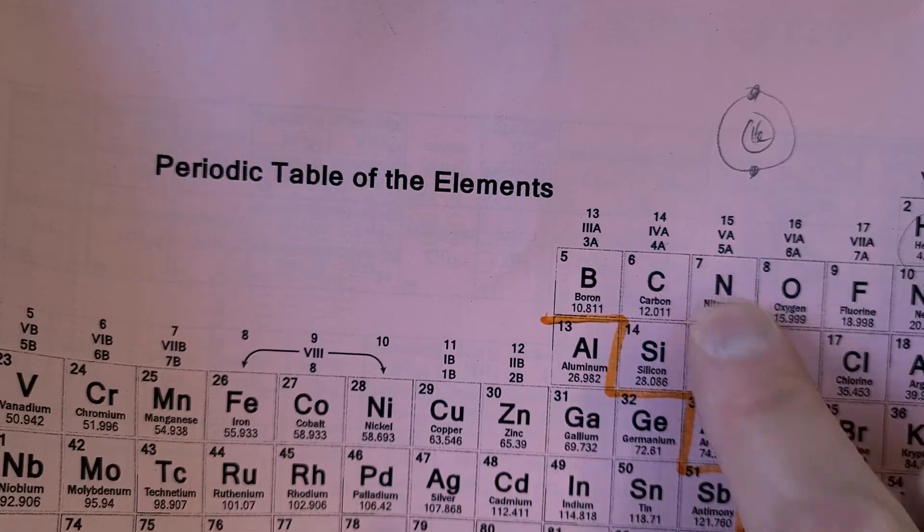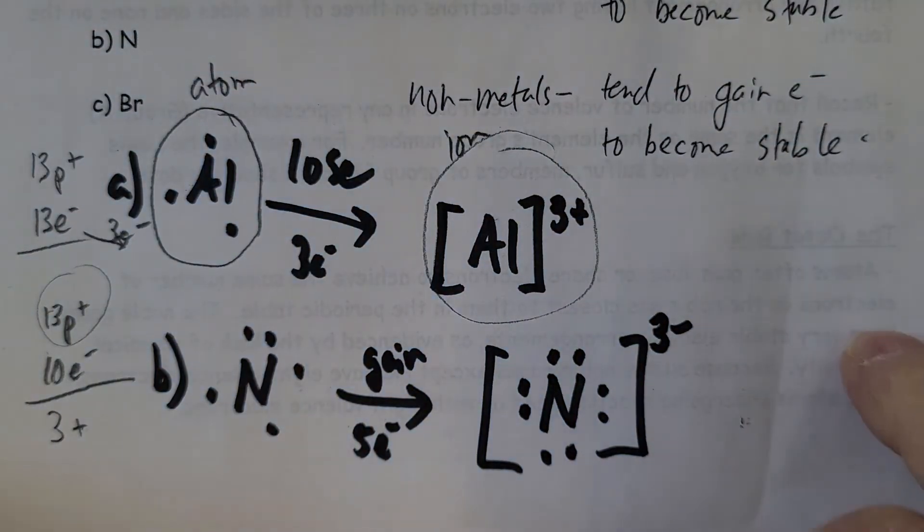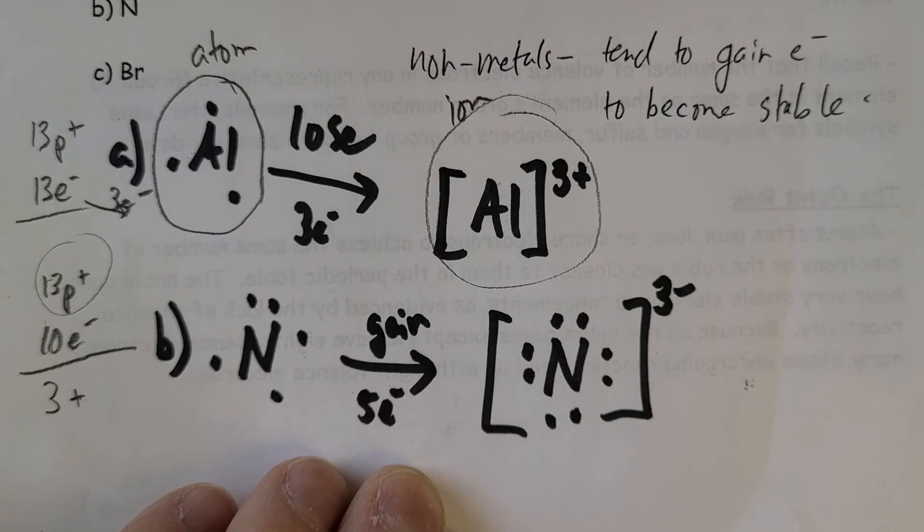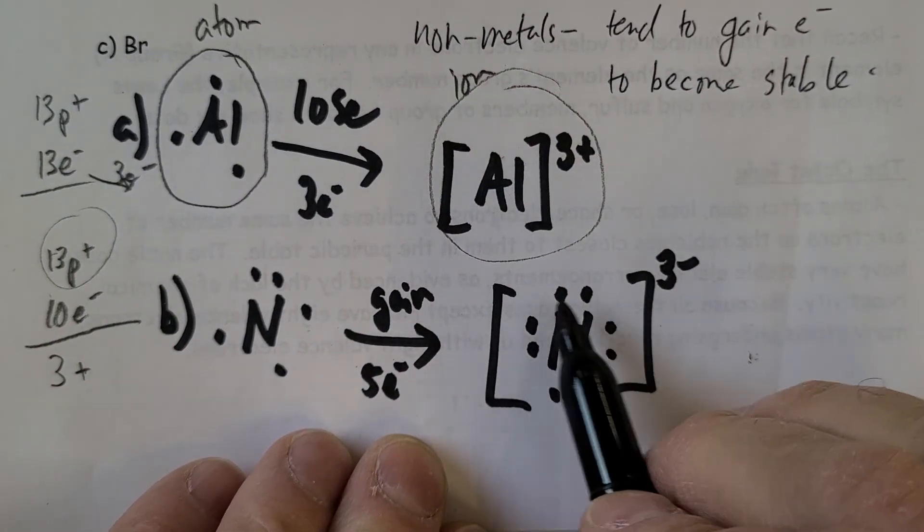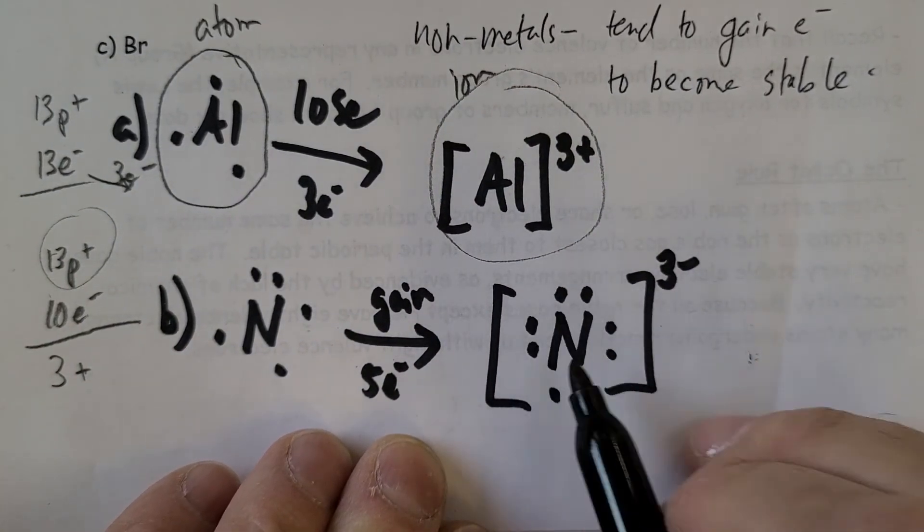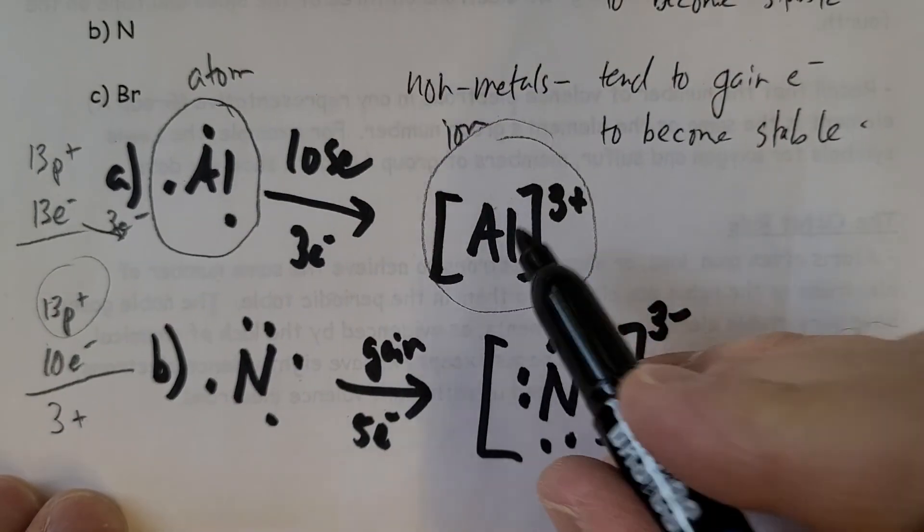We could think of it as it had seven protons and seven electrons, but if it gains three, it's going to have ten electrons and seven protons. So those three will be unbalanced, and the symbol for that will look like that. Non-metals will have full levels of electrons, whereas metals will have an empty current level, the level below is considered full.